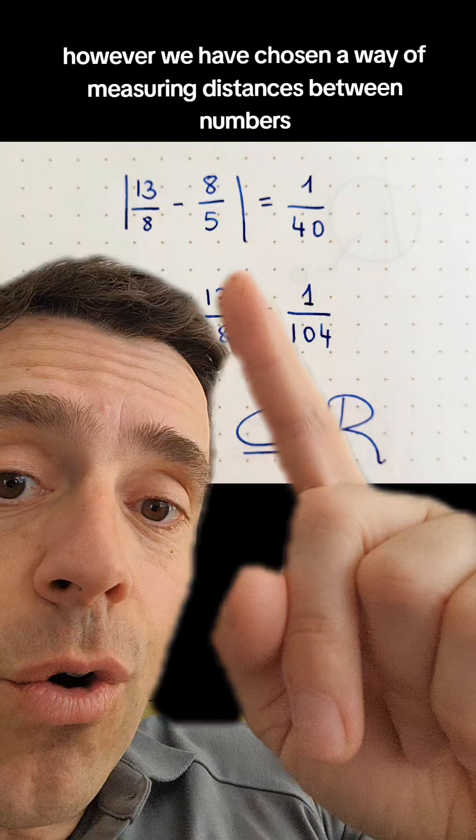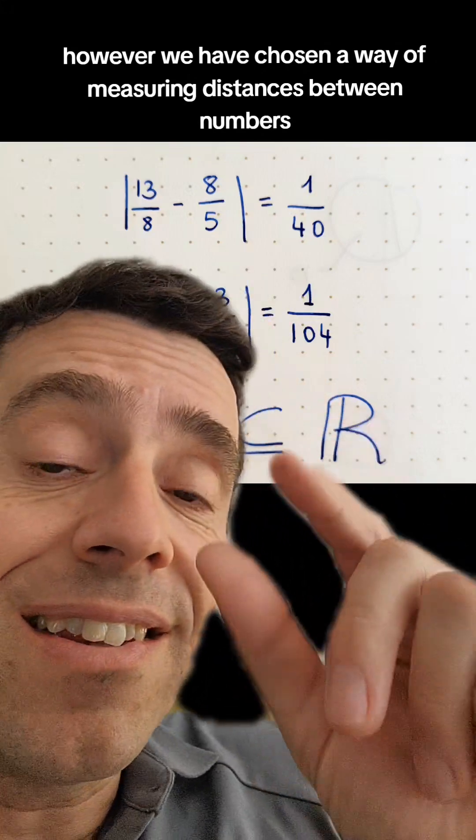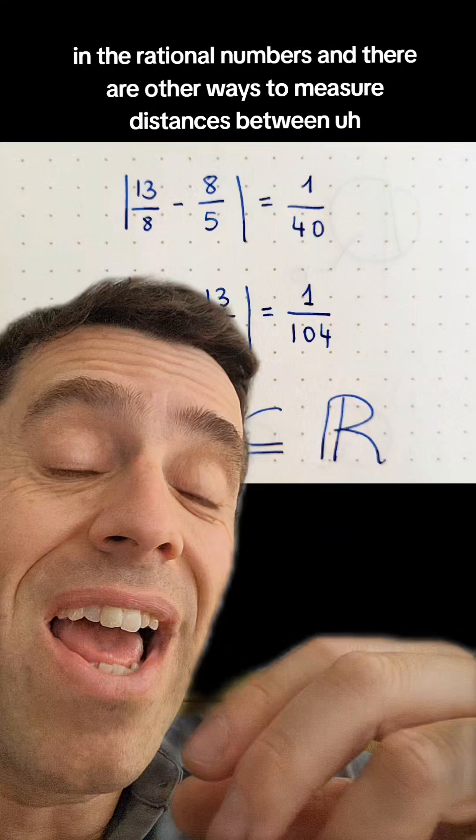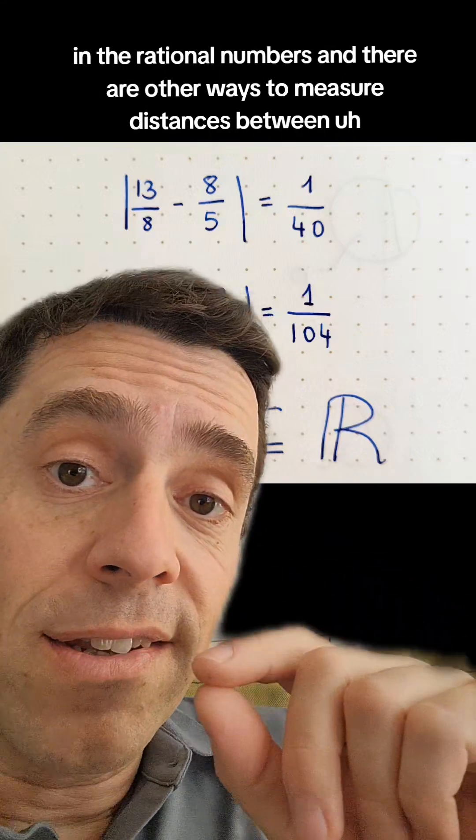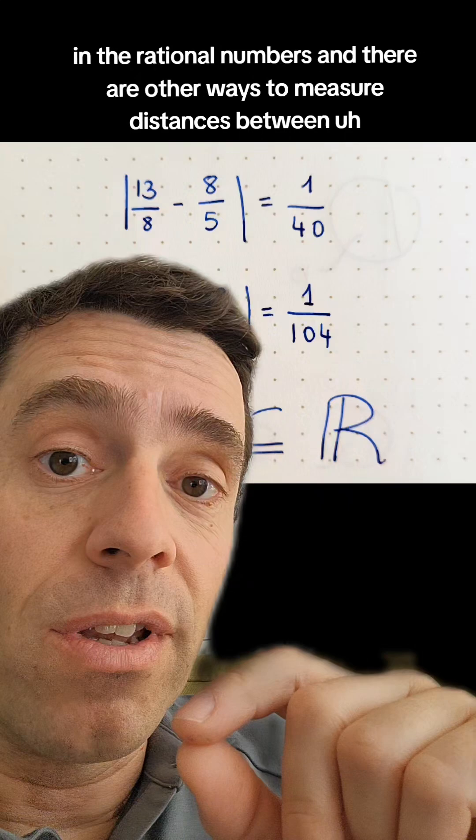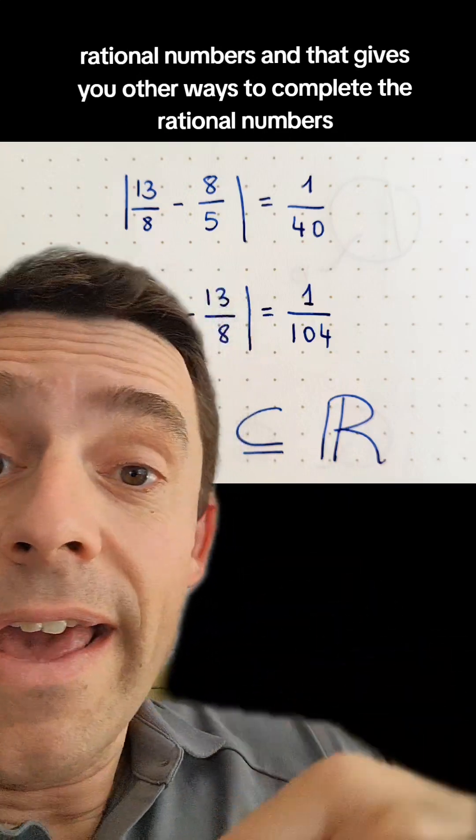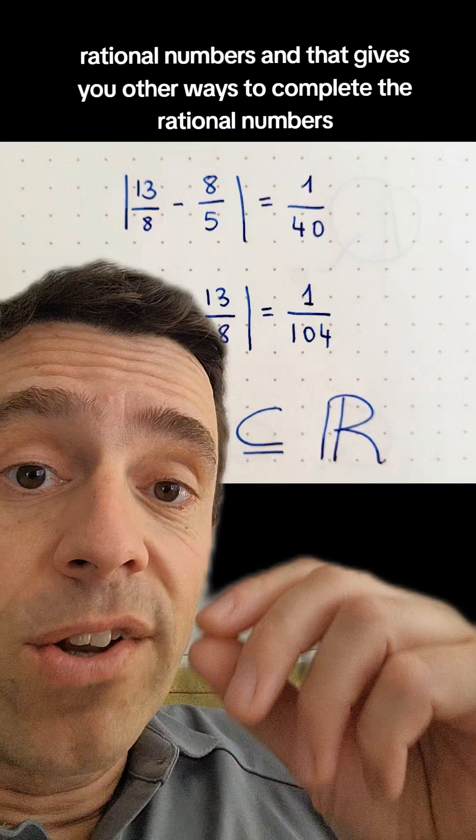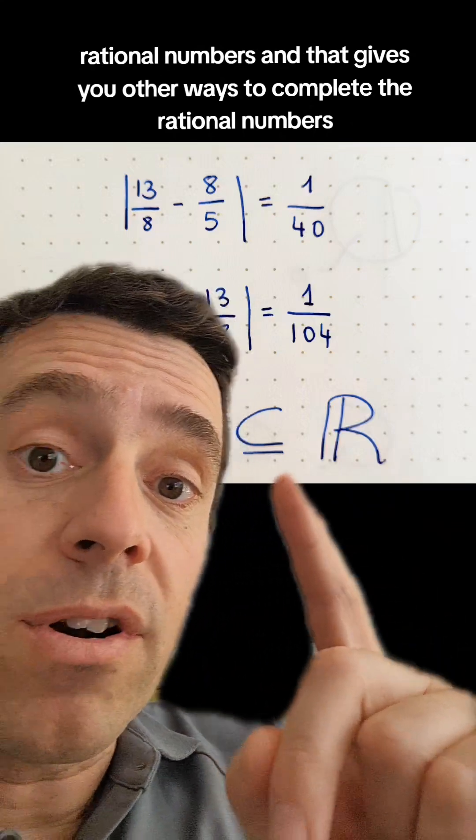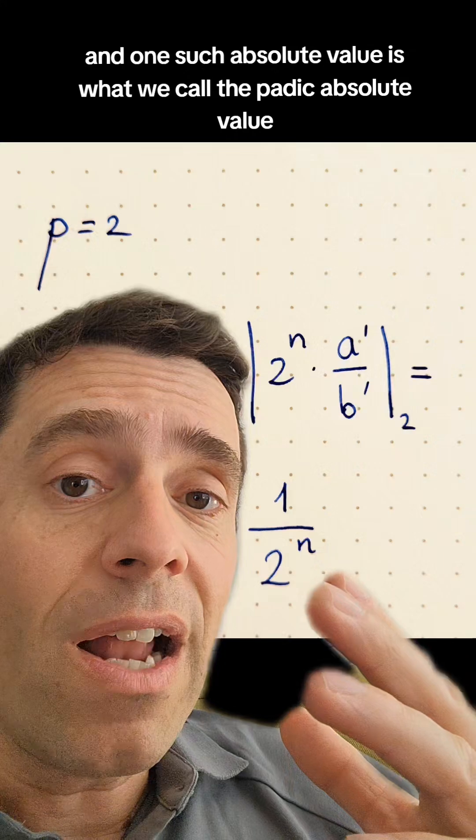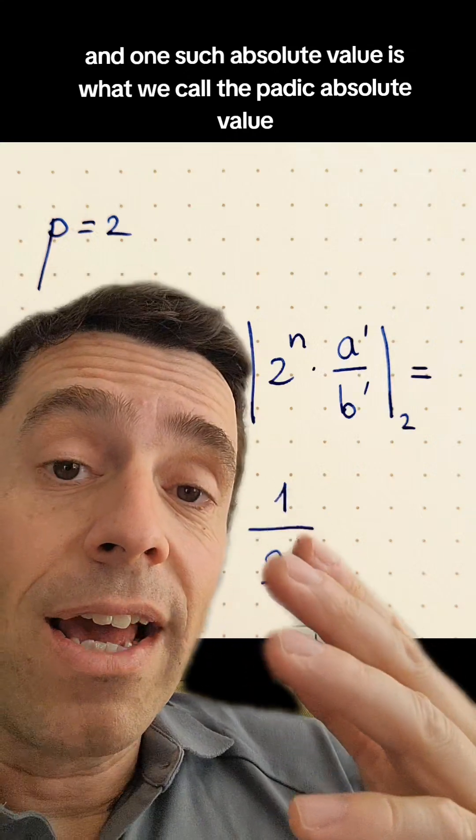However, we have chosen a way of measuring distances between numbers in the rational numbers, and there are other ways to measure distances between rational numbers, and that gives you other ways to complete the rational numbers. And one such absolute value is what we call the P-adic absolute value.